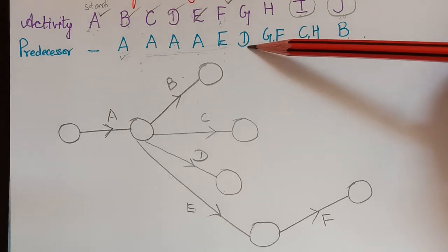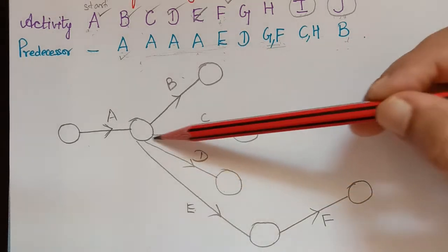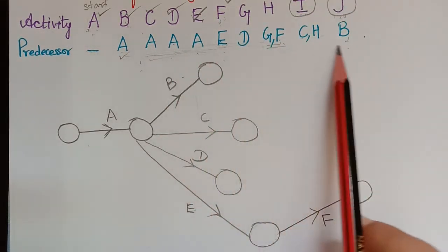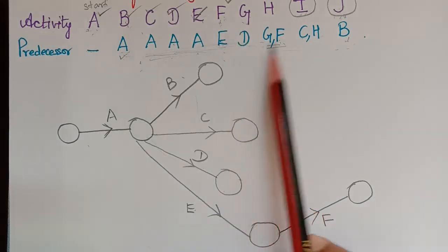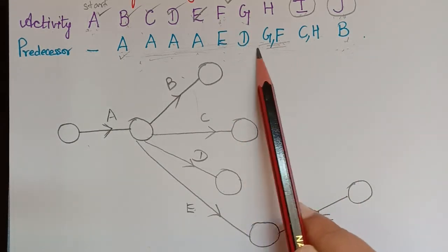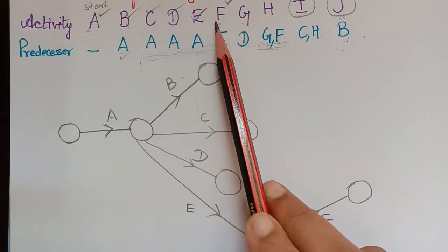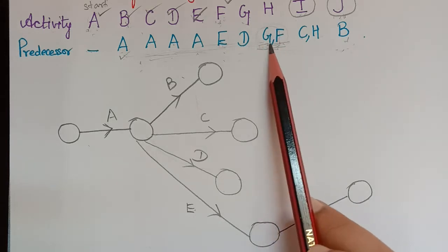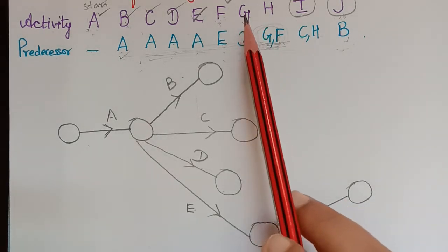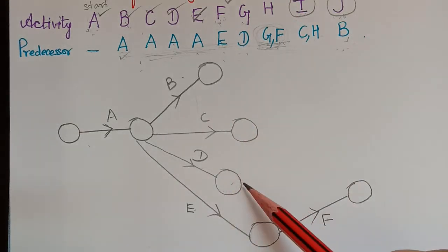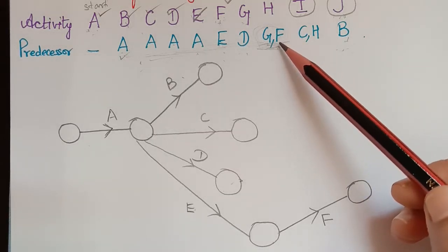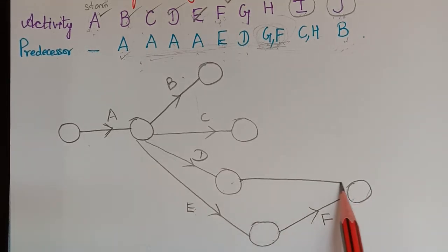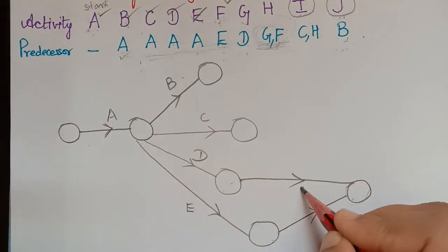Activity F is completed. Next, for activity G, the predecessor is activity D, so G starts from the end node of D. We then check the predecessor list: G has appeared along with F, which has already been completed. Therefore, the end node of G must also be the end node of F. So G starts from D and ends at the same end node as F.